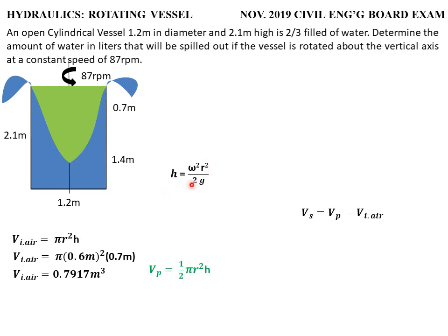For the height h of the paraboloid, we have r and acceleration due to gravity, but we still need w, the angular speed. The given speed is in revolutions per minute and we need to convert it to radians per second, because the formula requires radians per second.